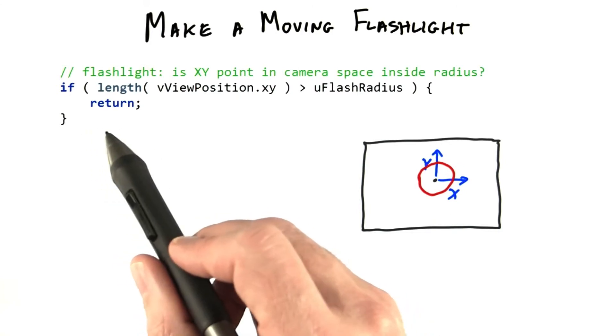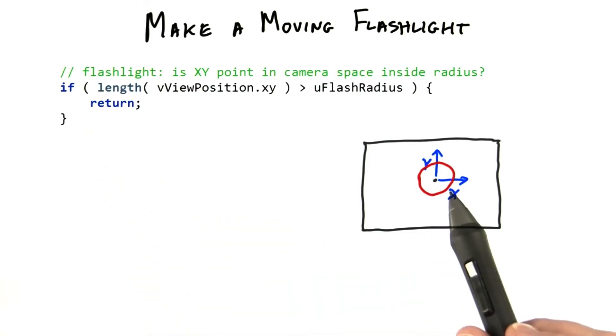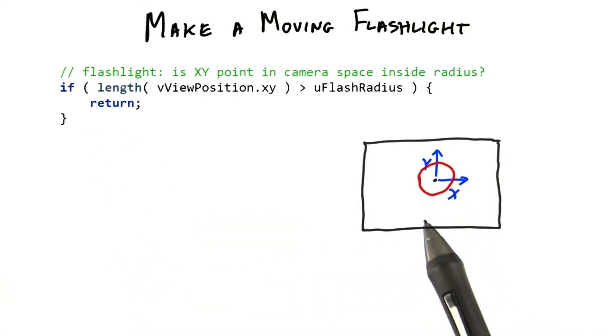We can return early if the surface is outside the given flashlight radius, so that only the ambient contribution lights the object.